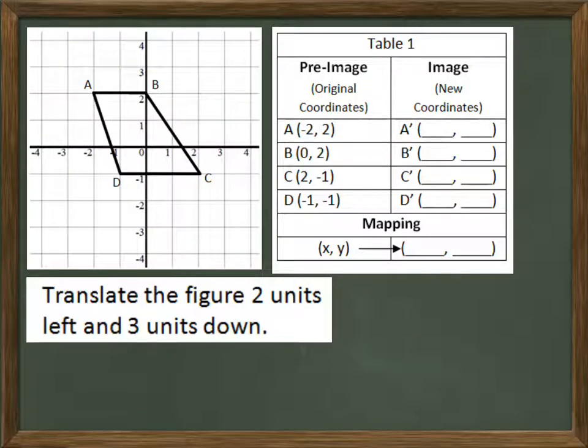So let's look at an example. Here's this trapezoid ABCD. Yes, that is a trapezoid. Check the definition. We're going to translate it two units left and three units down. So that means I'll just take each one of the vertices, the ABC and D points, and move them two units left and three units down. Make sure when you count that you're counting the spaces, not the corners of the grid.